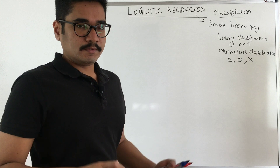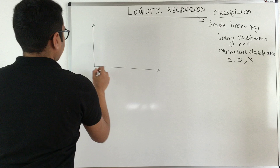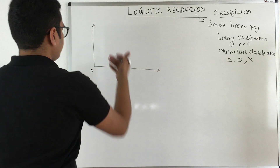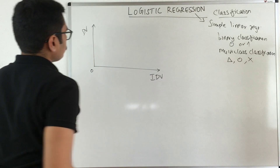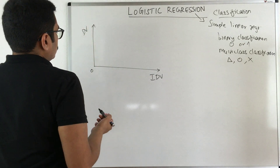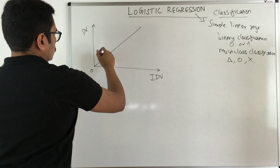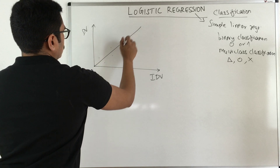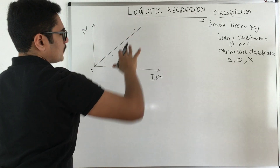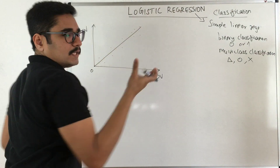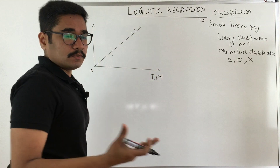Now let's understand how this basically works. Say we have two axes — we have our dependent variable and our independent variable. I am drawing a line through some instances, and what this basically forms is our linear regression. We are using the underlying principle of linear regression, and let's see how it is transformed into logistic regression.